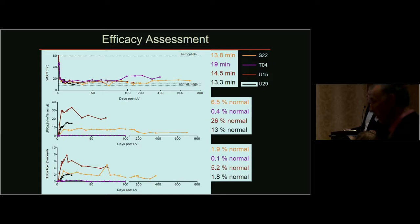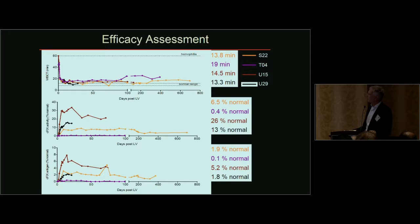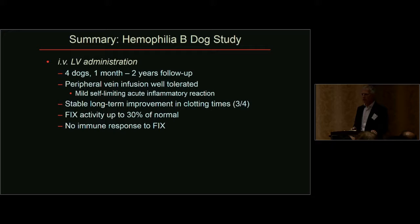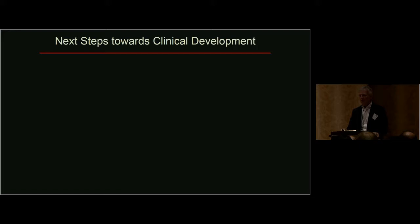Despite the mild inflammatory reaction, we established stable expression. Looking at clotting activity in terms of factor IX-driven activity, three of the four dogs showed stable, relatively high levels ranging from 6 to 30 percent. One dog was a failure, probably related to storage of the vector. The activity is actually higher than the antigen because we are using a hyperactive variant — this represents a very relevant therapeutic level of activity maintained long term. These dogs have been growing significantly during this time, and there is no evidence of immune response to the factor.